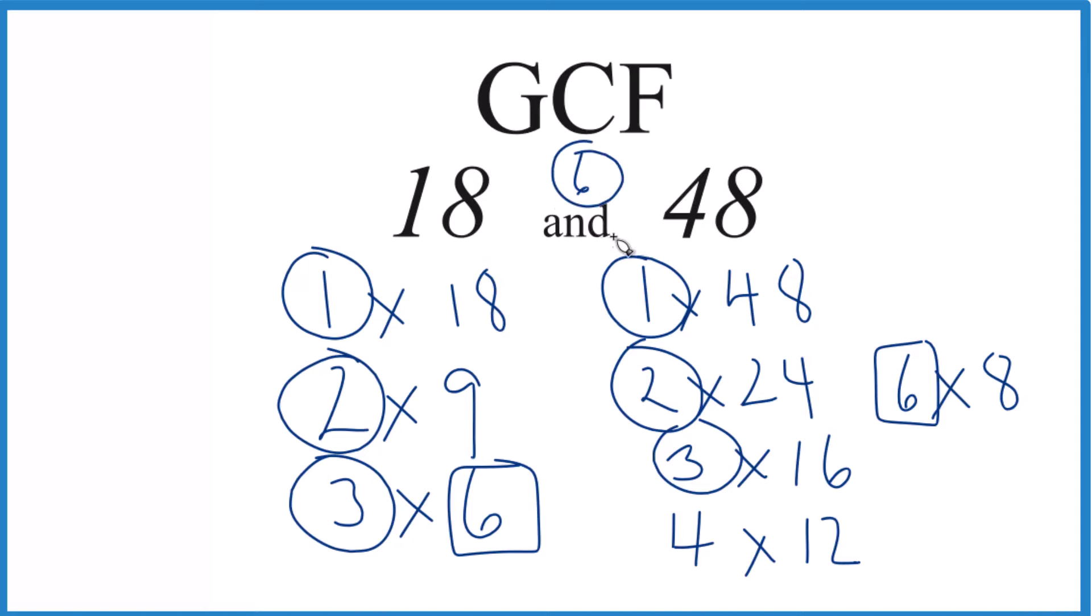So in answer to our question, the GCF for 18 and 48 is 6. There are other methods you can use, like prime factorization, but unless you have a pretty big number, this works pretty well.